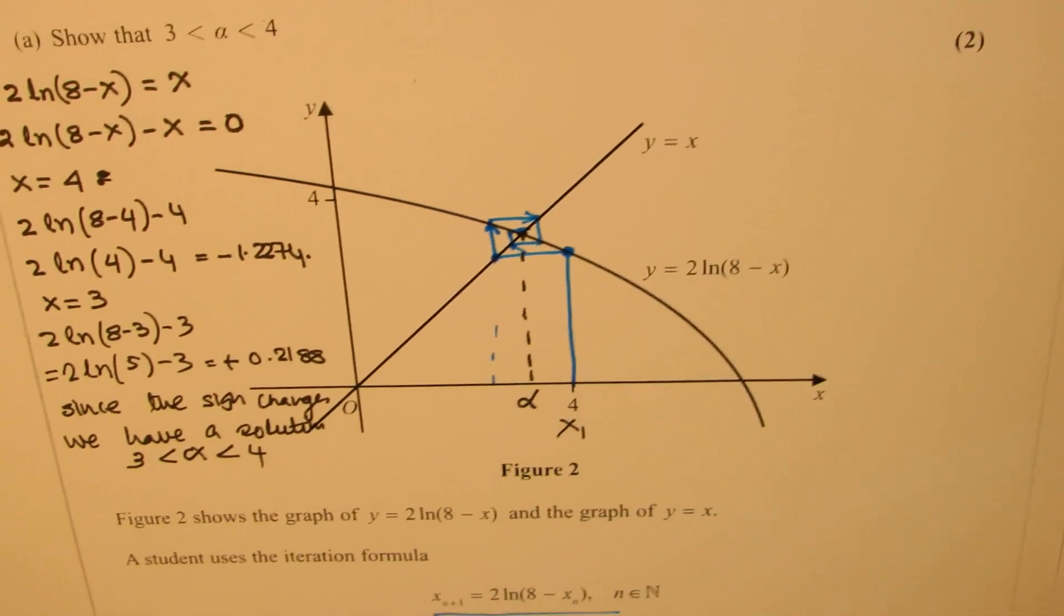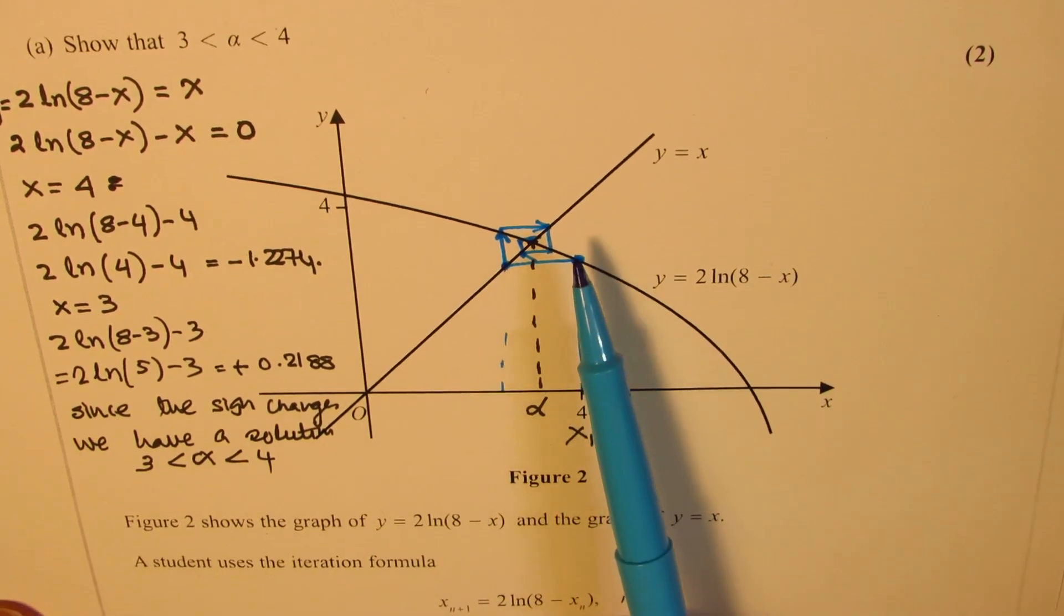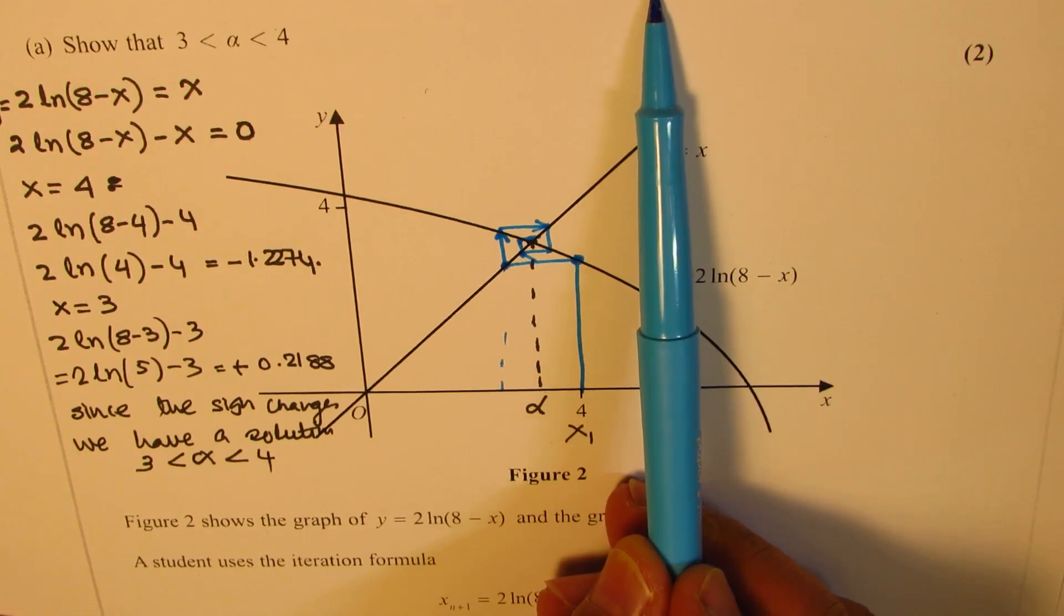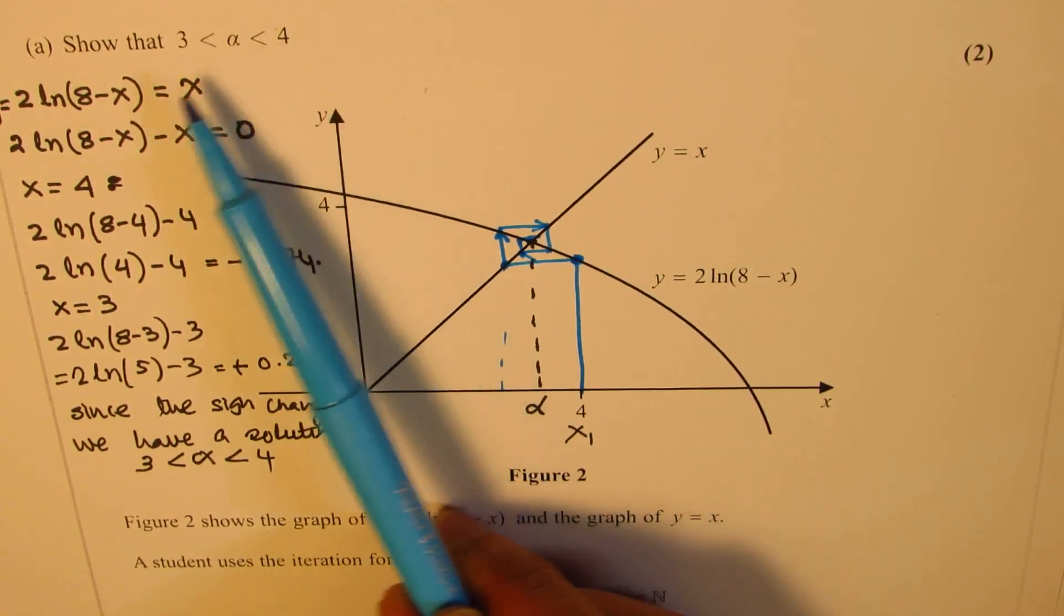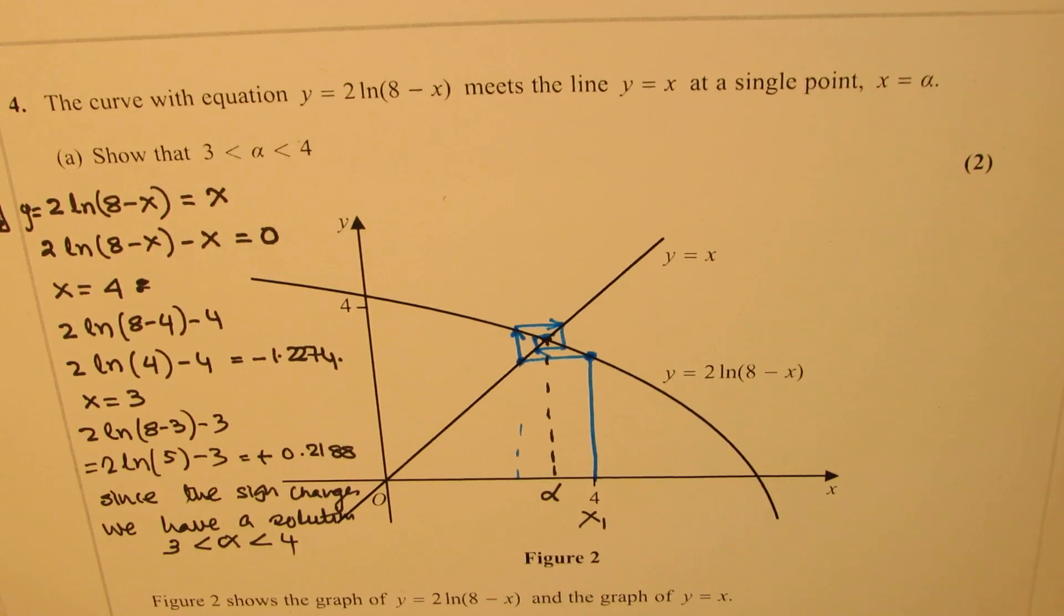We are sure that since the value of one function take away the other is positive on one side and negative on the other side, in between we do have a solution, and this iteration method can be used. That is how we could actually answer this particular solution.